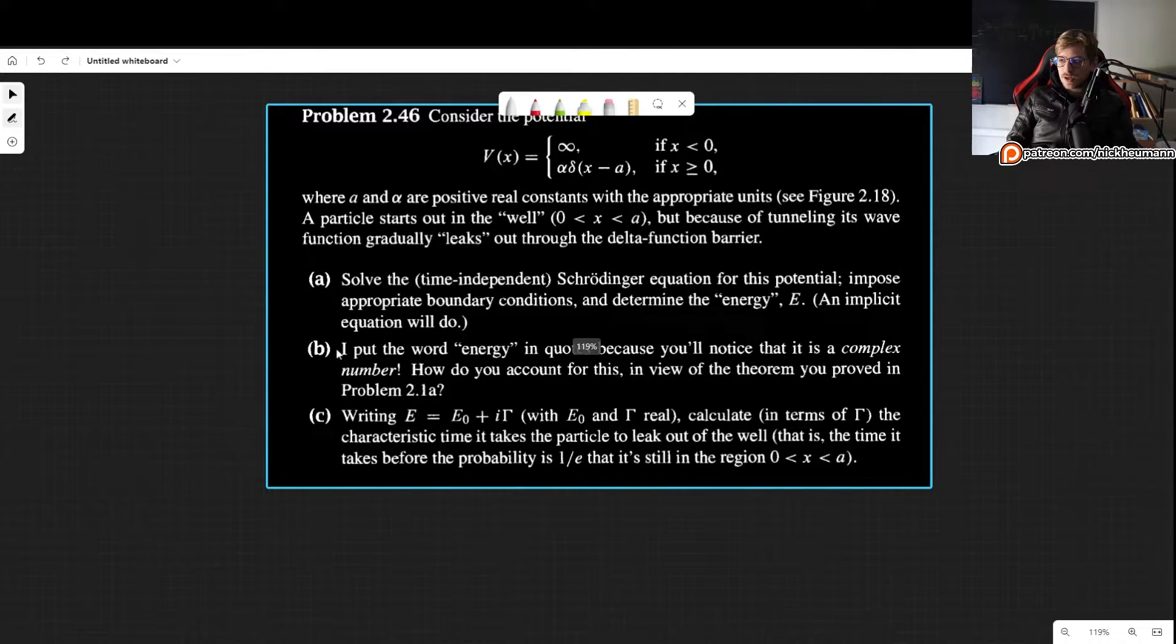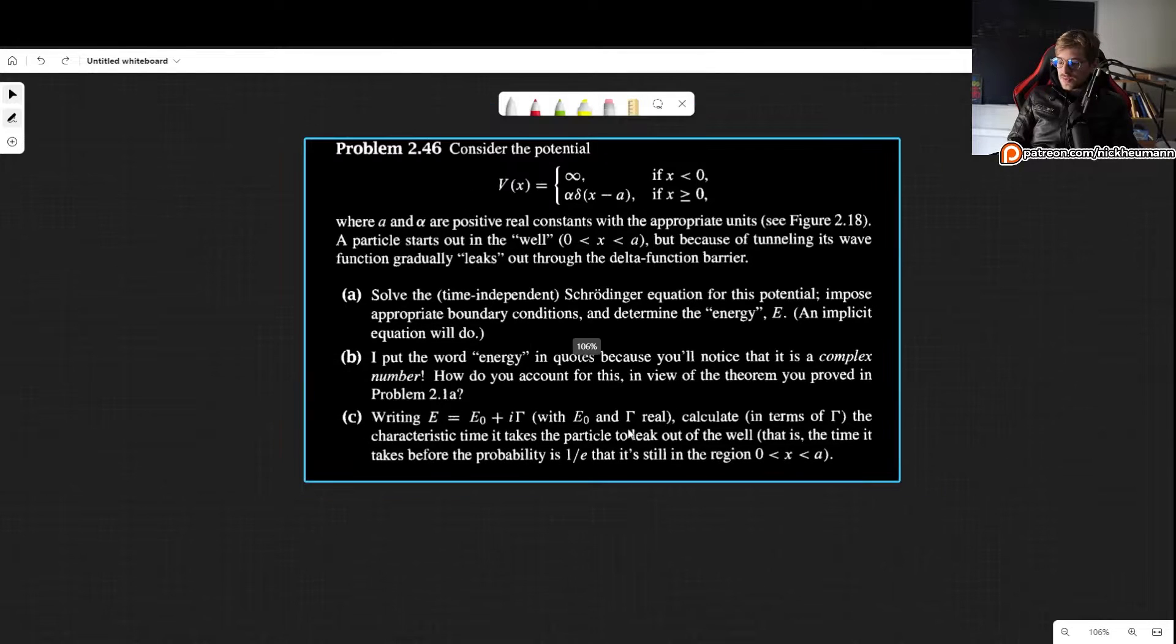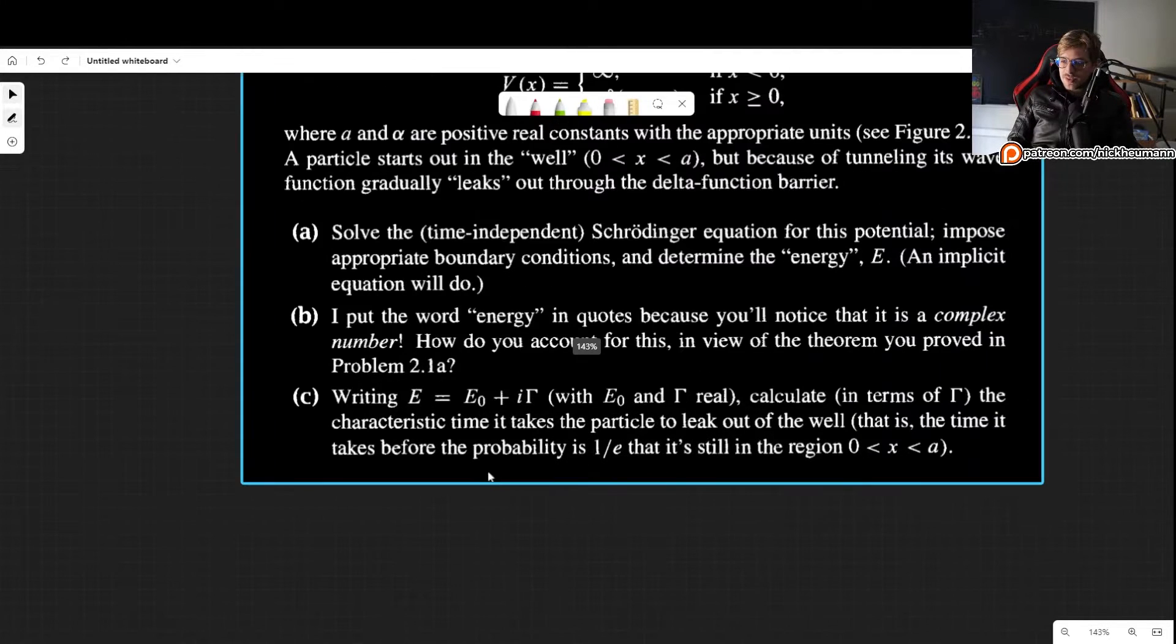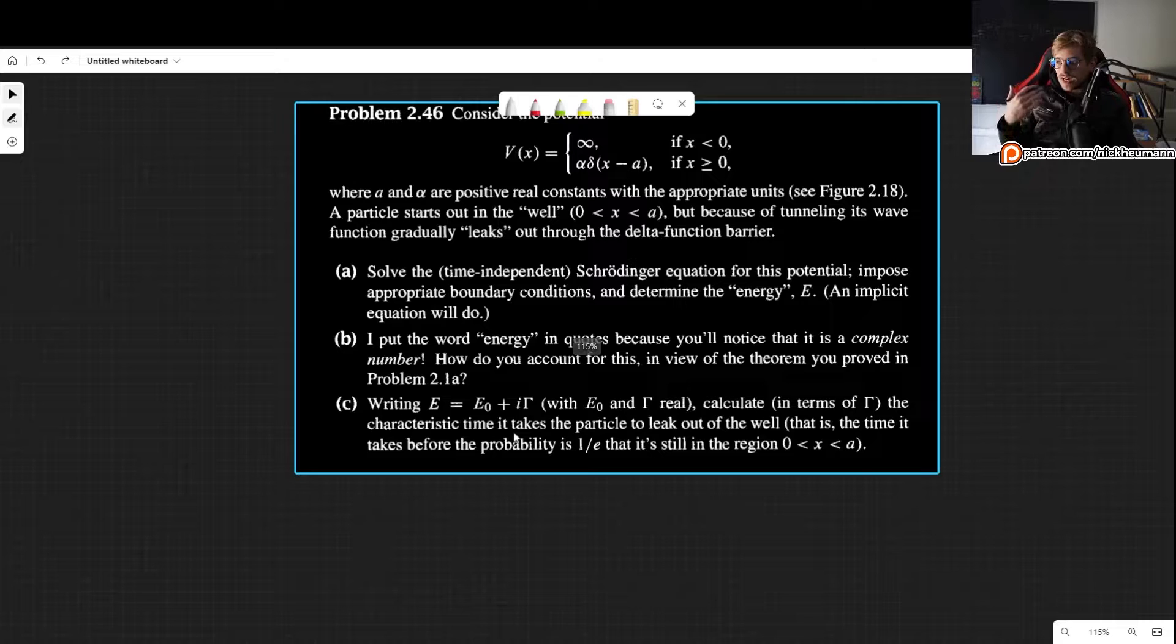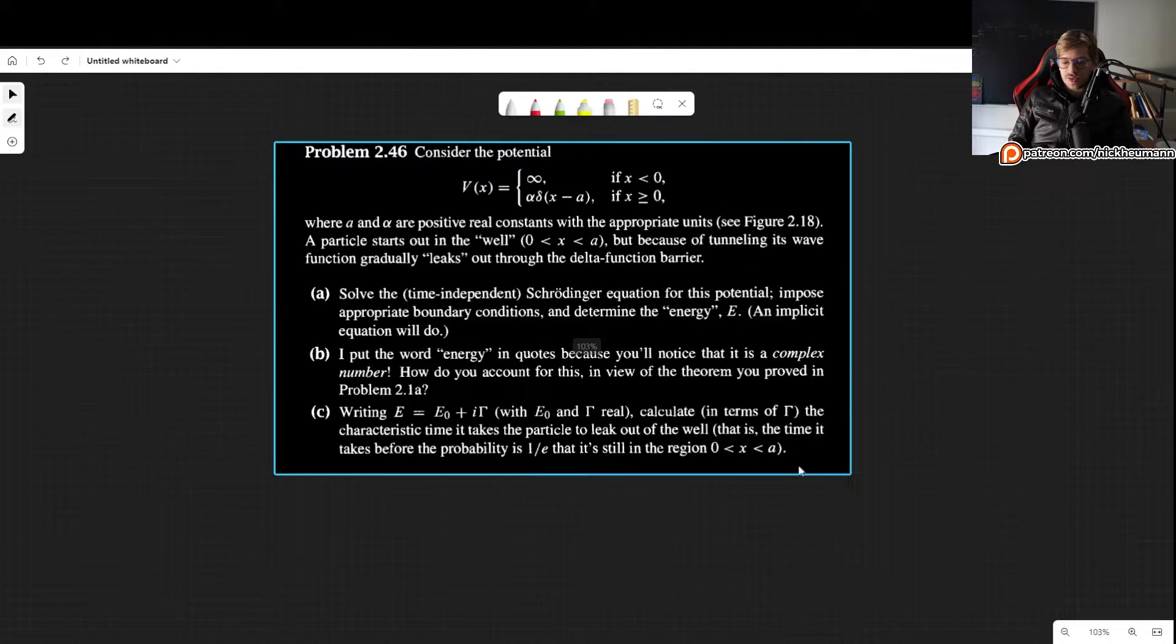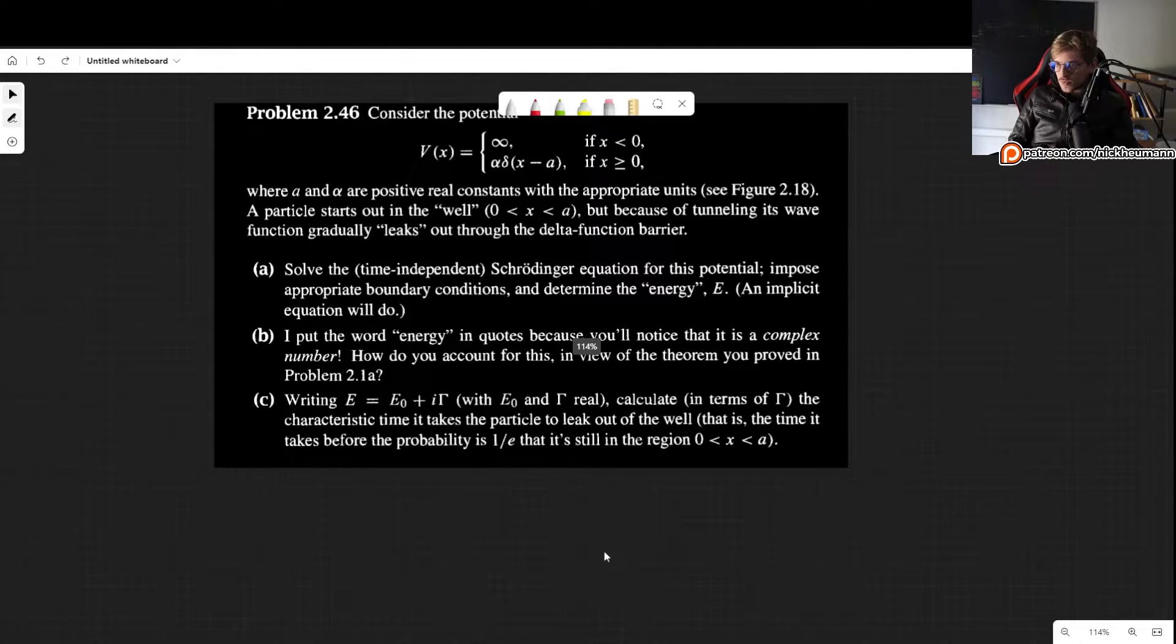In part b, we need to understand why our result from part a is going to be a complex number. And in part c, we will rewrite the energy as the sum of a real and imaginary part, and we will calculate in terms of gamma the characteristic time it takes the particle to leak out of the well, that is, the time it takes before the probability is 1 over e that it's still in the region between 0 and a.